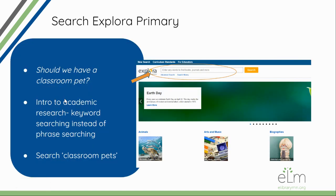When searching EBSCO Explora Primary, type in the search box. If you're researching something like 'should we have a classroom pet?', you'll want to think about keyword searching. Instead of typing the whole phrase or 'what are the pros and cons of having a classroom pet,' you'd want to use a keyword search like 'classroom pets.' That's probably a new concept for your youngest learners, so keep that in mind if you bring students here and ask them to do their own searching.